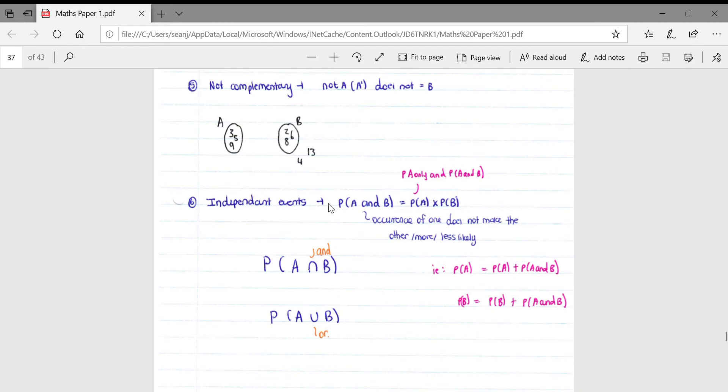Then if you look at independent events, simple formula for this is that probability of A and B, so the intersection between circles in a Venn diagram, is equal to the probability of A multiplied by the probability of B.